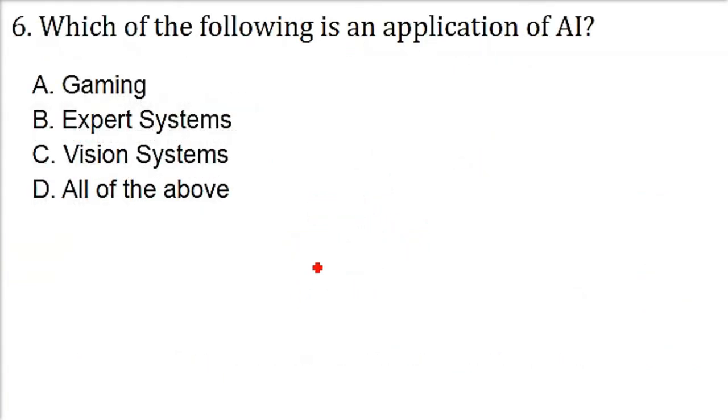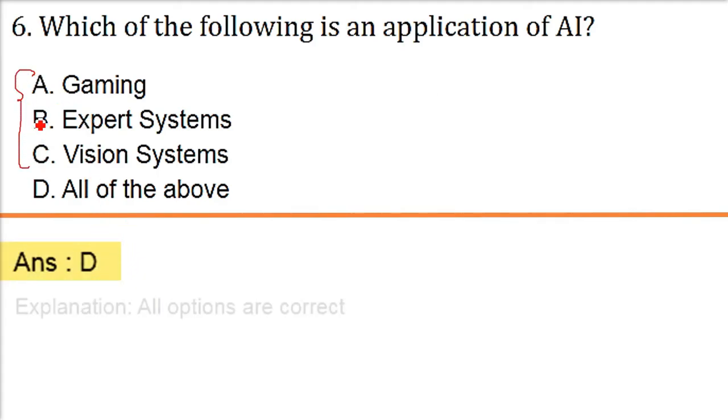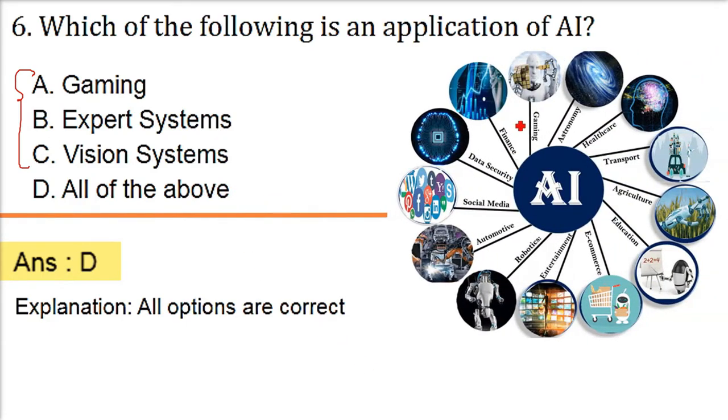Which of the following is an application of AI? Application of artificial intelligence. So all of these falls in the application area of AI. Finance, data security, social media, automotive, you know Tesla, driverless cars, robotics, entertainment, e-commerce, education, agriculture, transport, healthcare, and astronomy, gaming. All of these.